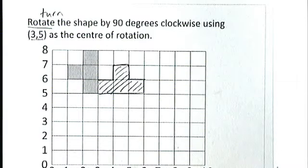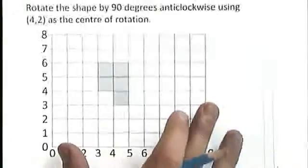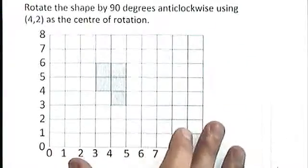So that is rotating a shape using a piece of tracing paper. I've got one more example, this time asking us to do something slightly different, only very slightly different.